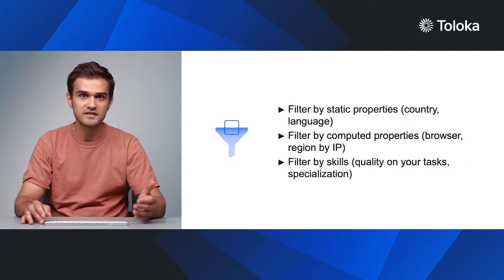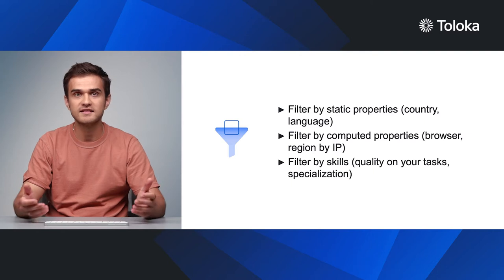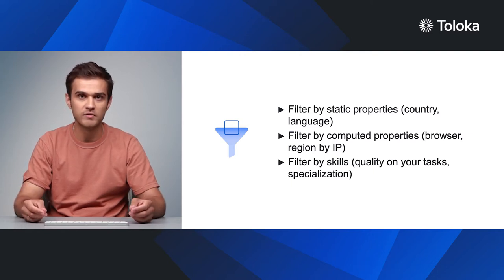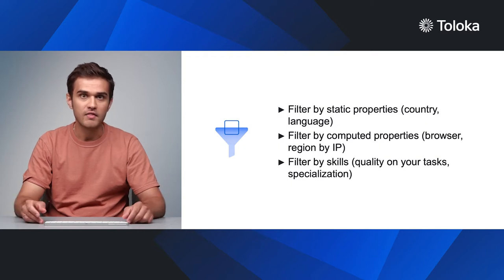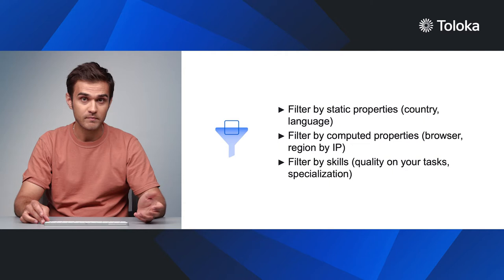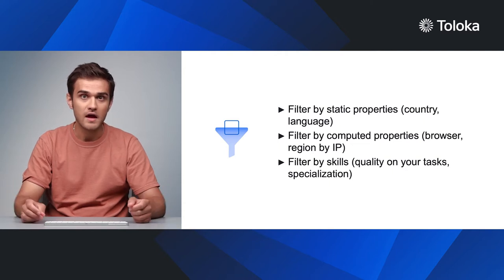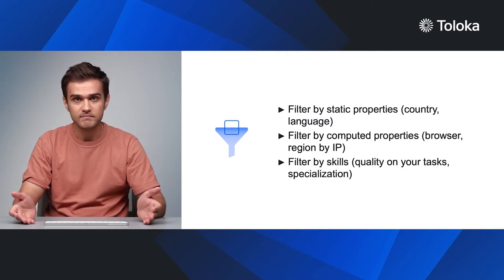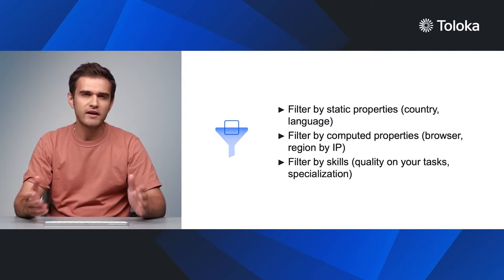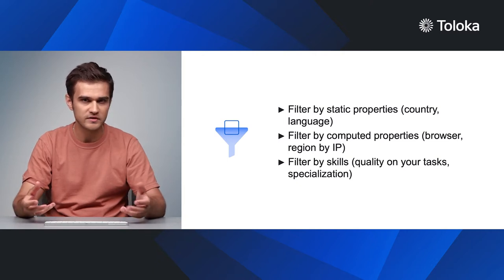The next important step is selecting performers based on certain essential characteristics. Explore the input filters offered by the platform itself. The most popular ones include the country and city where the users live, their operating system, preferred languages, and their gender and age. If you think that any of these filters will give you a better subset of performers, use them.